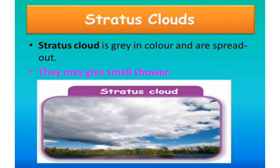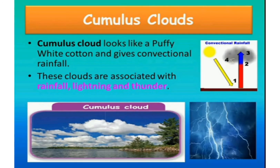Children, have you seen puffy white cotton clouds in the sky? Very pretty ones. Yes, these clouds are called cumulus clouds. Cumulus cloud looks like puffy white cotton and gives convectional rainfall. These clouds are associated with rainfall, lightning and thunder.